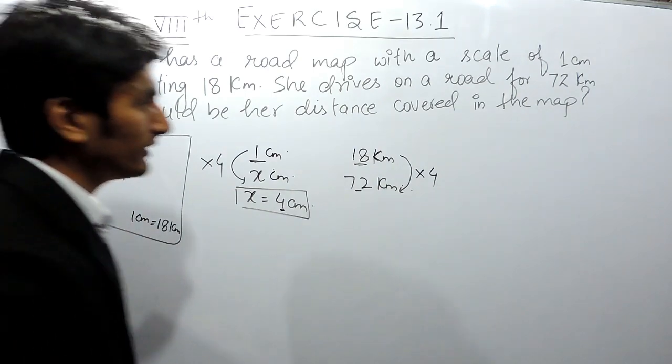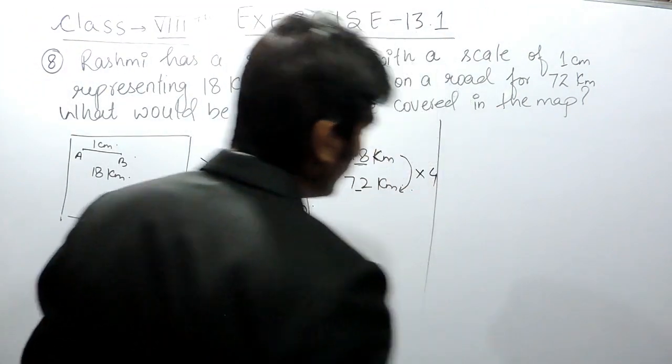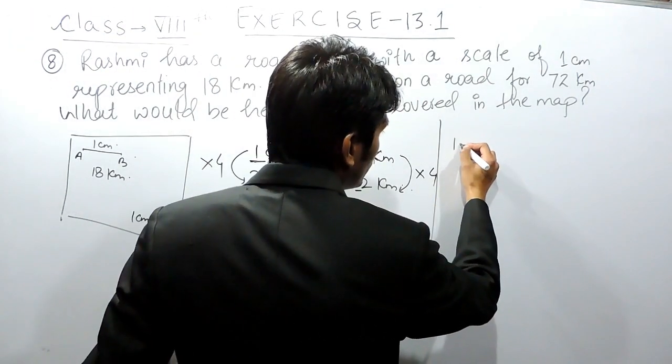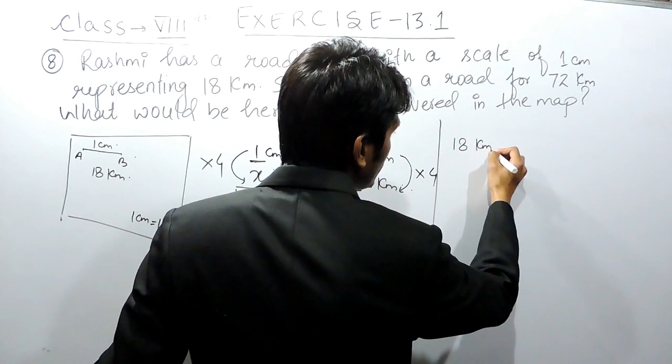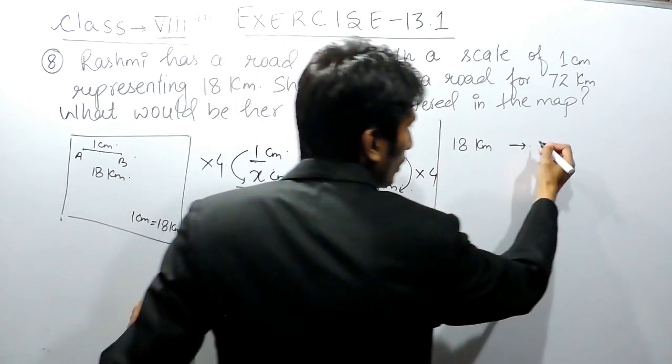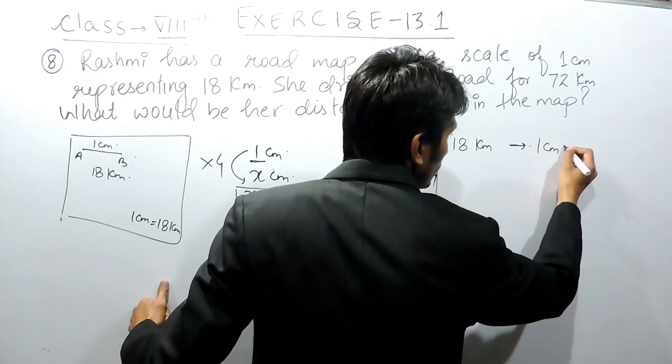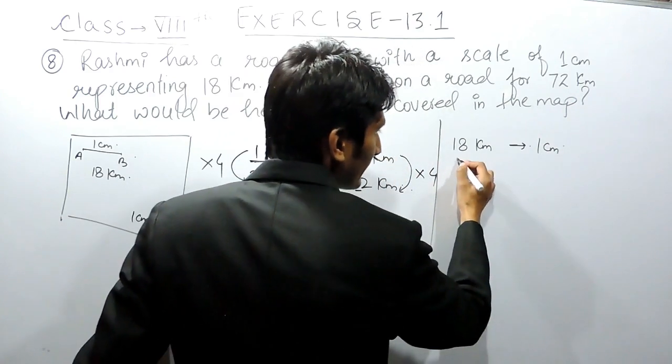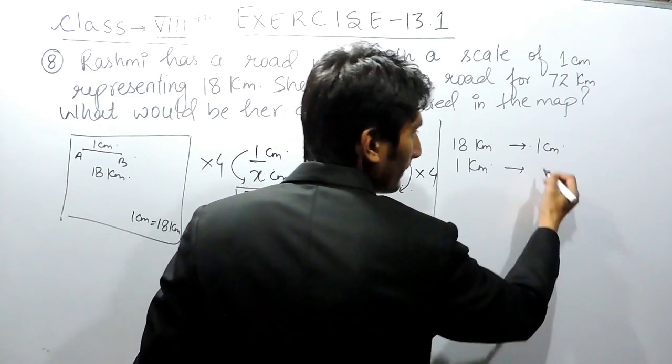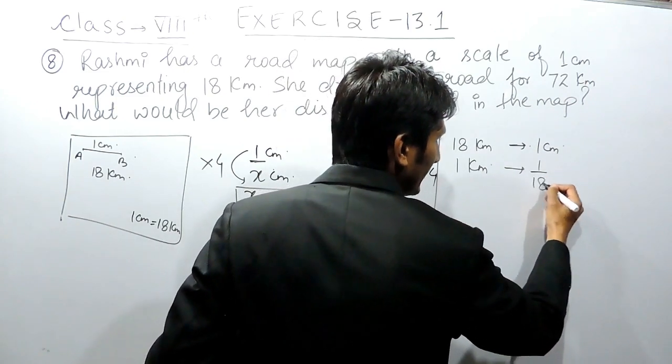There is another way of solving this which we taught in schools. When in actual she is traveling 18 kilometers, so traveling 18 kilometers, on map she is traveling 1 centimeter. Traveling 1 kilometer on road, she will be traveling obviously less on the map, so this should divide by 18.